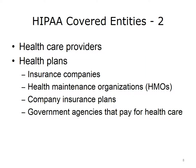The first category of covered entities is health care providers. HIPAA defines health care providers quite broadly to include not only individuals such as doctors and dentists, but also institutions including clinics, hospitals, and nursing homes. Basically, any person or organization that provides health care, bills for health care, or is paid for health care is a covered entity. Health care providers are covered entities even if they use a third party, such as a billing service, to transmit the protected electronic information.